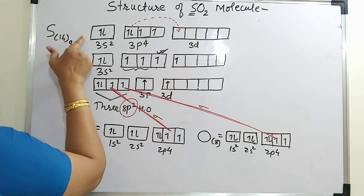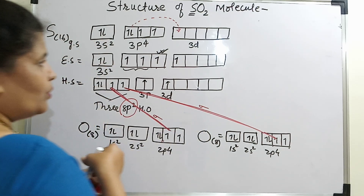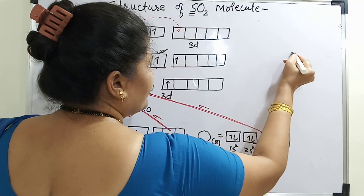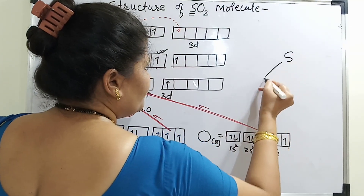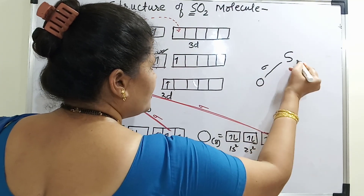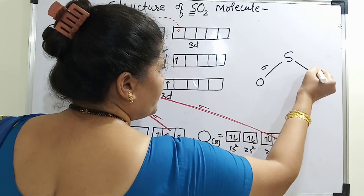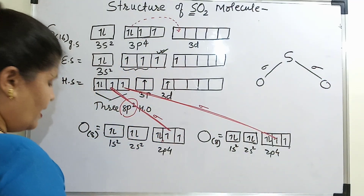Which atom is this? This is sulfur. So what type of bond you will get here — sulfur with the first oxygen is a sigma bond, and with the second oxygen is also a sigma bond. So this is the skeleton.